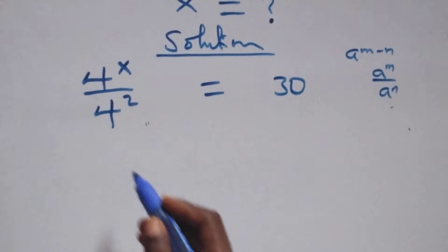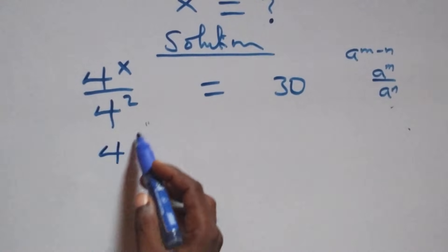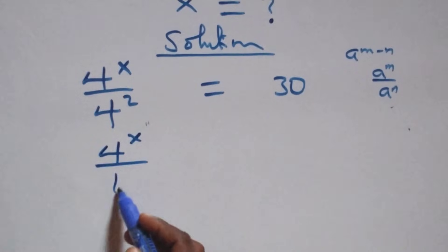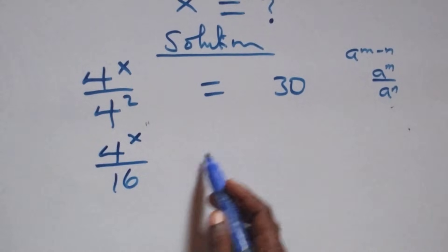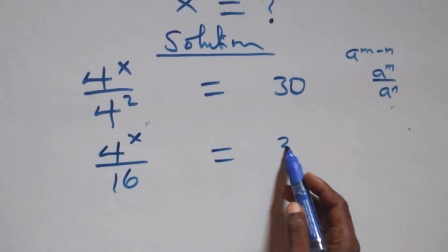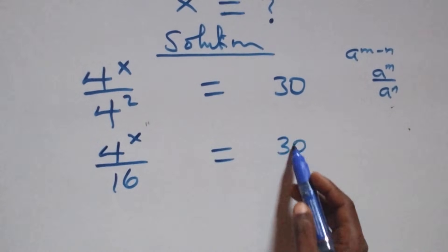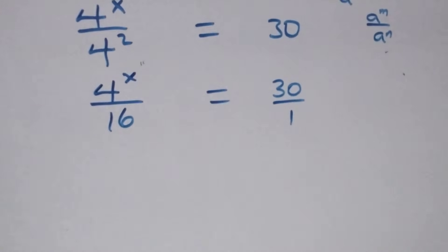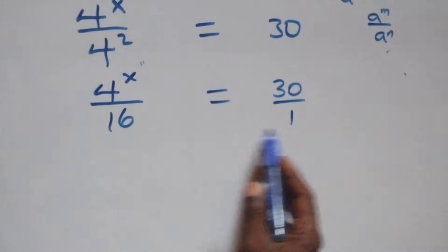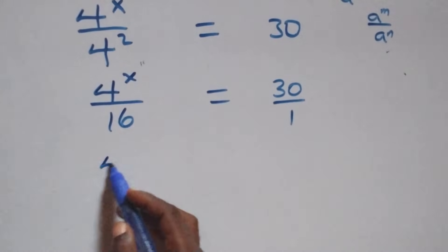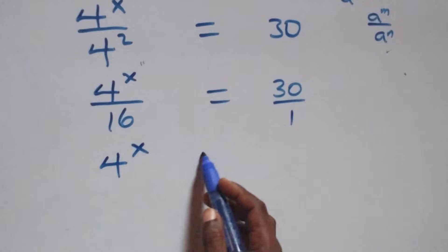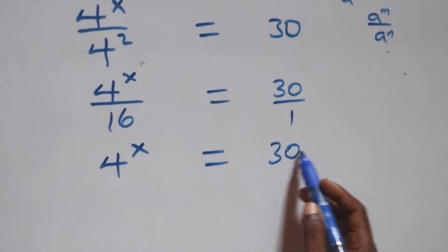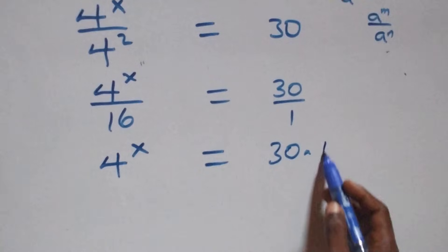Next step, we write this as 4 raised to power x over 4 squared, where 4 times 4 is 16, equals 30 over 1. Then we cross-multiply: 4 raised to power x times 1 is the same as 4 raised to power x, and that equals 30 times 16.